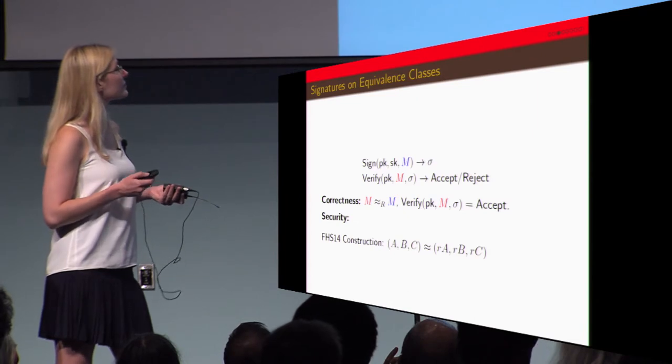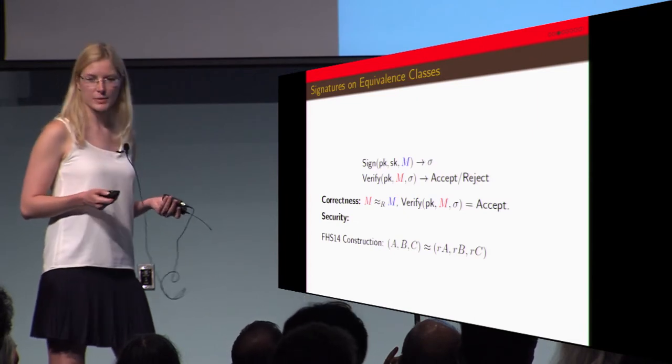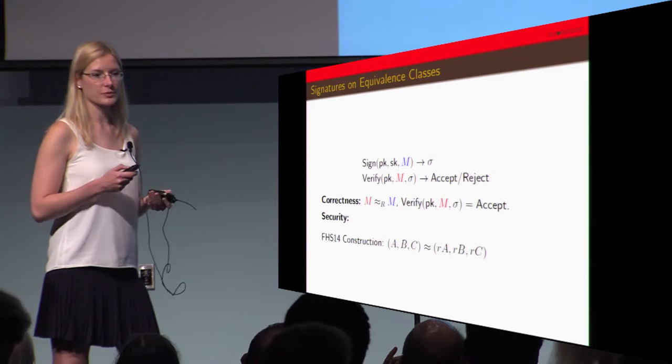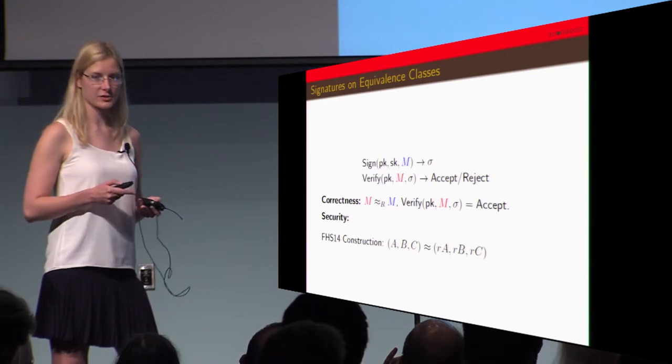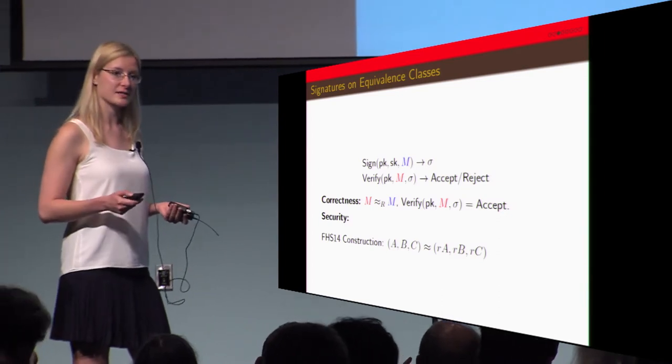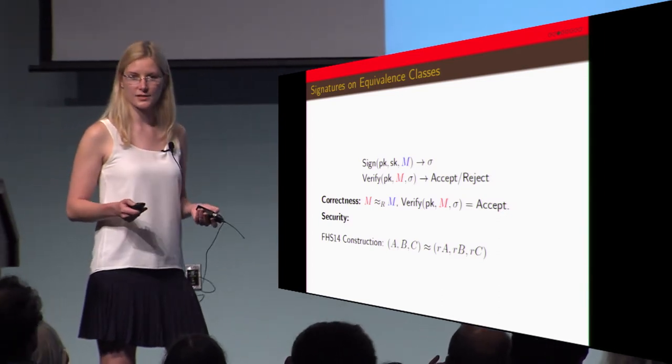Security in this way basically just means that the adversary produces a forged public key, message and signature, and the forgery is successful if the message is not in any equivalence class that's already been signed.